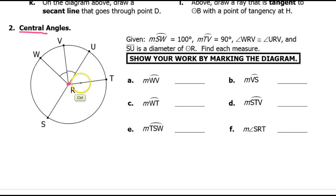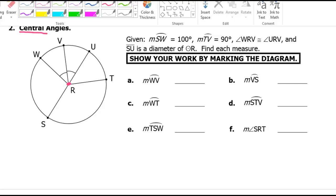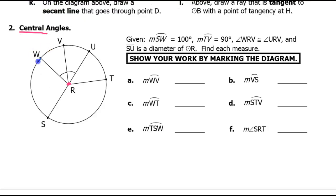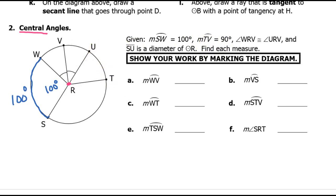They tell us that arc SW is 100 degrees, so arc SW is right here — that arc is 100 degrees, which means the angle is also 100 degrees. Arc TV is 90 degrees, so here's arc TV — that is 90 degrees, which means this angle right here is 90 degrees.